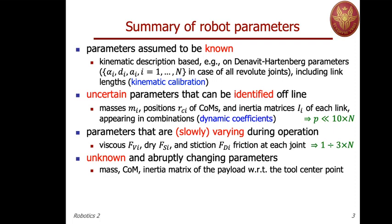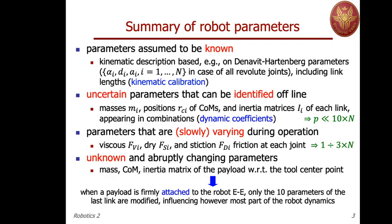Finally, there are unknown parameters that change abruptly — typically those related to the payload. When you pick up a payload, there is a change in a number of parameters related to the last link, and this change affects most parts of the robot dynamics through the combination of dynamic coefficients. This instantaneous variation will induce some error in executing the trajectory, and the adaptive control from there on will try to recover the error along the trajectory back to zero.